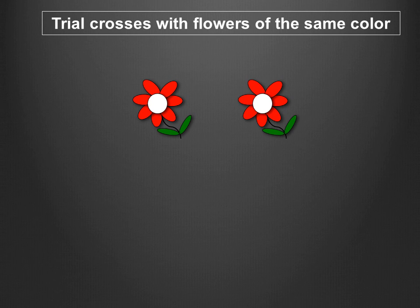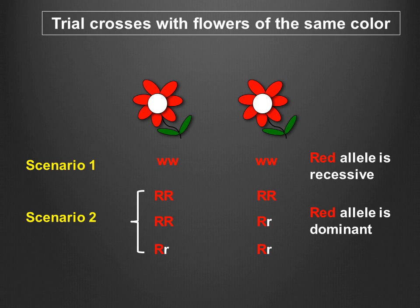Let's start with a cross of individuals with the same phenotype — in this case, plants with red flowers. In the scenario that the red allele is recessive, the only possible genotype for both plants is homozygous recessive. However, in the scenario that the red allele is dominant, there are three possibilities: both plants can be homozygous dominant; one plant can be homozygous dominant and the other heterozygous; or both plants can be heterozygous. We'll perform these crosses and determine which provides the most useful information.